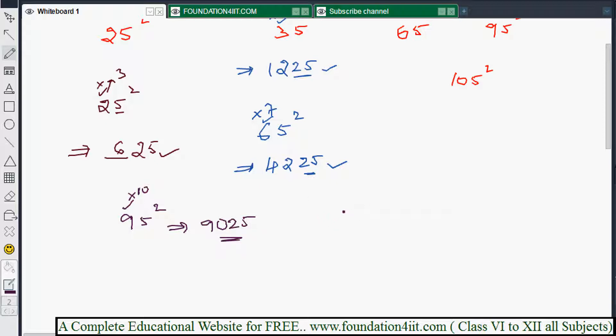Not only 2 digit, take a 3 digit number. That is 105 square. So what you will write? First except 5 is 10. So 10 into next number of 10 is 11. 10 times 11 is 110. 11 into 10, 110. And 5 square is 25. 11,025 is the square of 105.